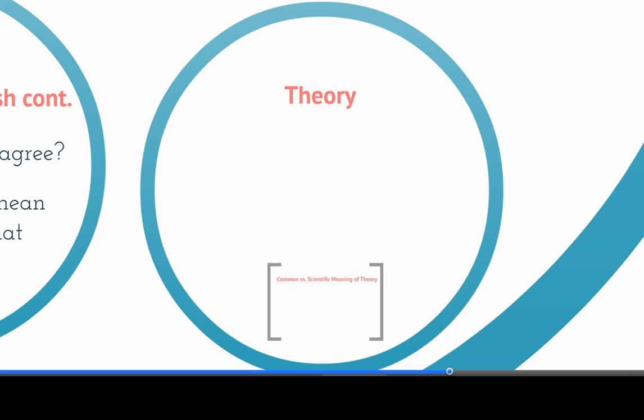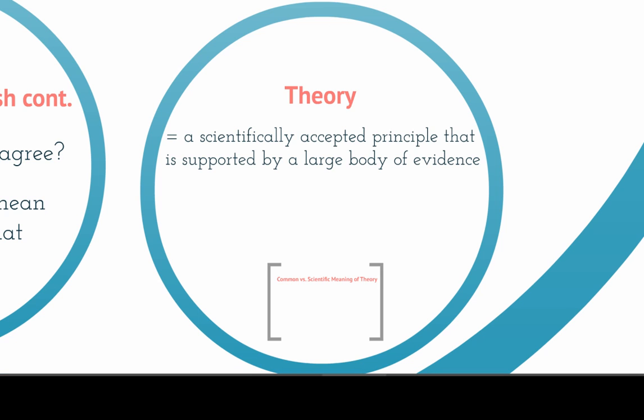A theory is a scientifically accepted principle that's supported by a large body of evidence, and it comes from testing many different hypotheses. These are much more general ideas, and not every hypothesis leads to a theory.